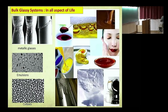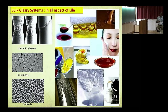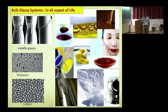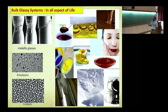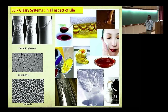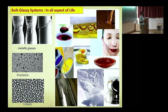Why study glassy systems? Because they are ubiquitous in our life. Various materials we use in daily life are of a glassy nature — for example, metallic glasses are in your iPhone, and then you have emulsions, colloids, glaciers, and when you have avalanches in glaciers they can be very catastrophic. Understanding their dynamical and mechanical properties is very important.